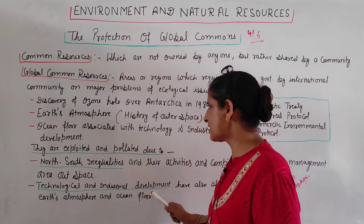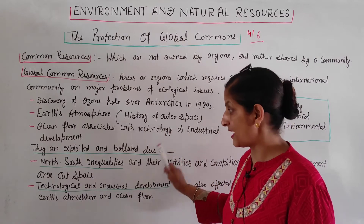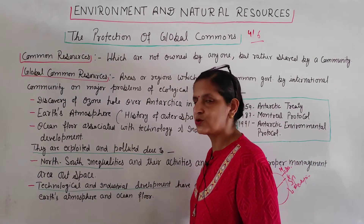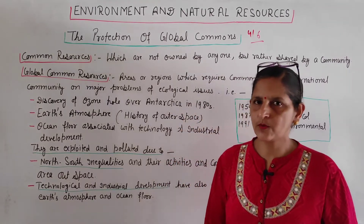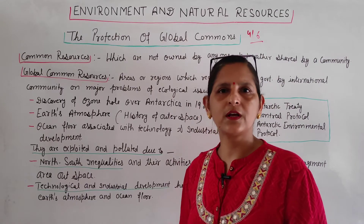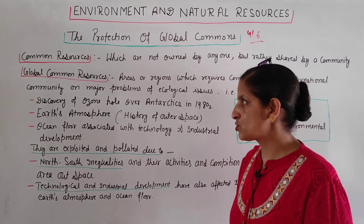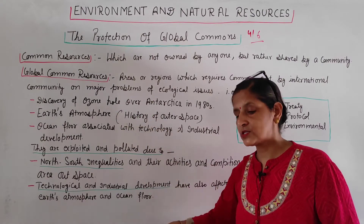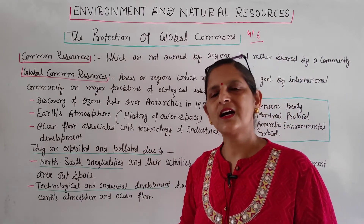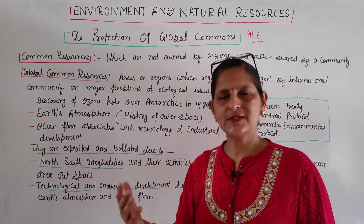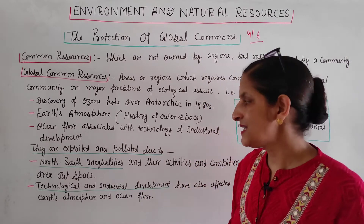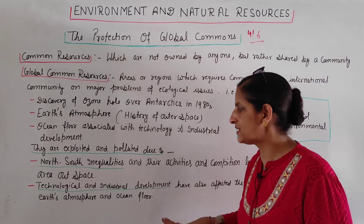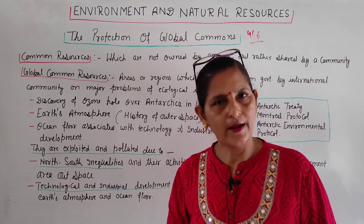Technology and industrial development ne bhi earth ke atmosphere aur ocean floor ko affect kiya hai. Kyunki technological development ke saath industries hain, aur industries se smoke nikalti hai, jisse air pollution hota hai — aur air pollution ka effect ozone layer par padta hai. Isi tarah, industry se jo bhi waste material nikalti hai, woh sidha rivers mein jaati hai, jisse water pollution hota hai. Toh industrial aur technological development ki wajah se earth ka atmosphere aur ocean floor dono affected hue hain.